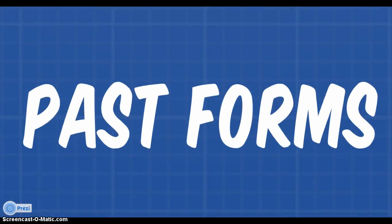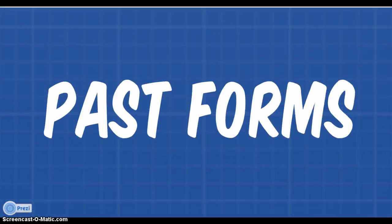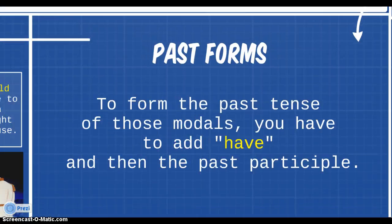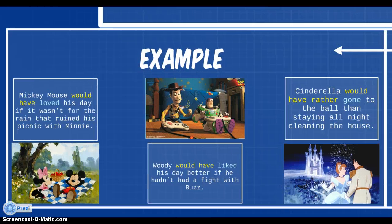Now that you understand the present forms of the modals, we are going to explain to you their past forms. The rule is quite simple. To form the past tense of those modals, you have to add have, and then the past participle. To help you understand, here are some examples of the three modals used in their past forms.